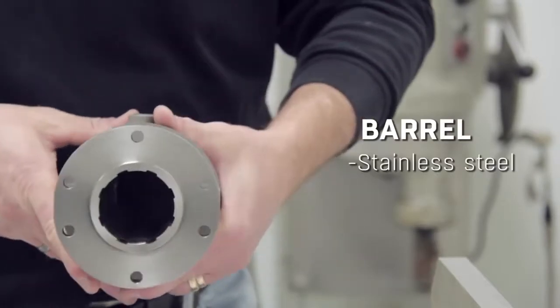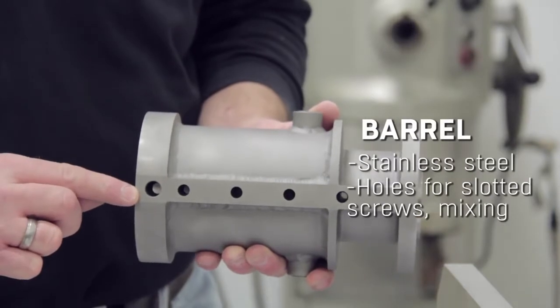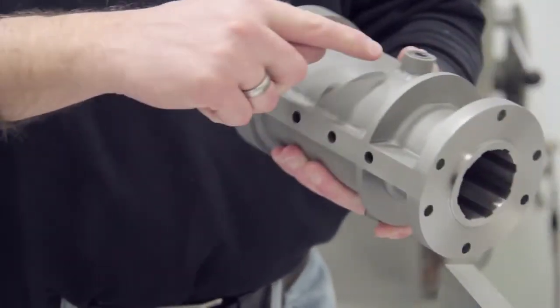This is the TF200 stainless steel barrel. It's shown here with ribs. It's also drilled and tapped for agitating pins that can be heated or cooled and it's drilled and tapped for a pressure transducer.